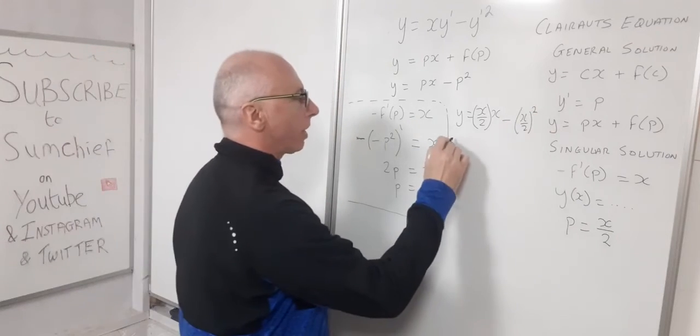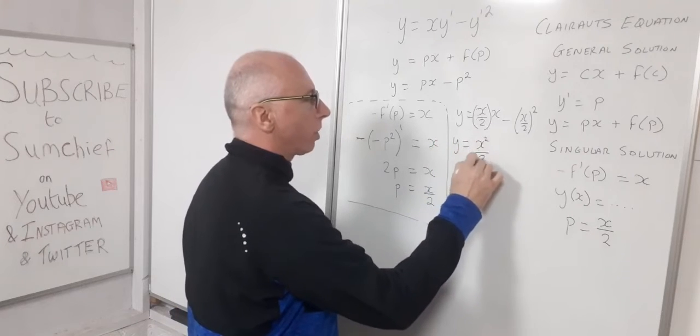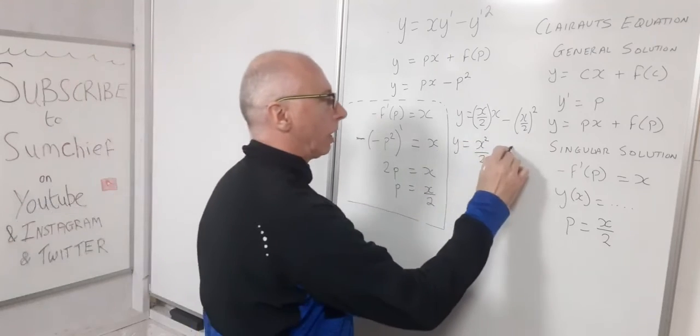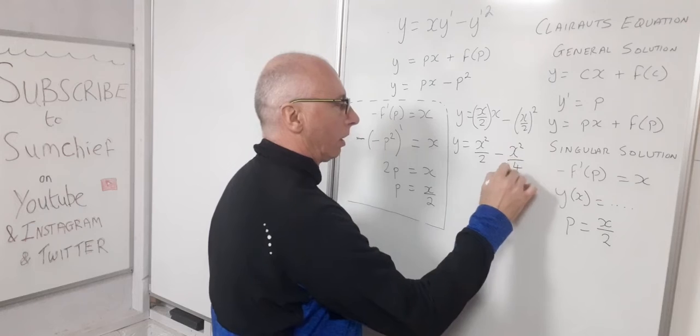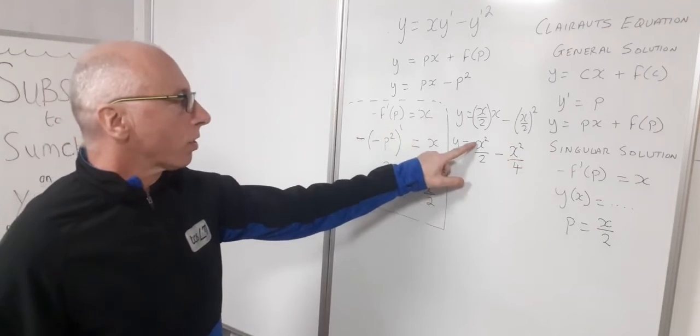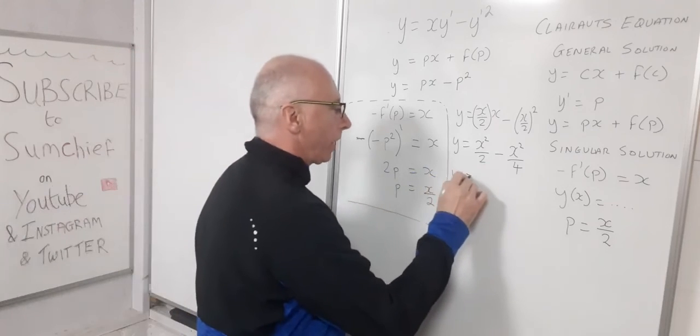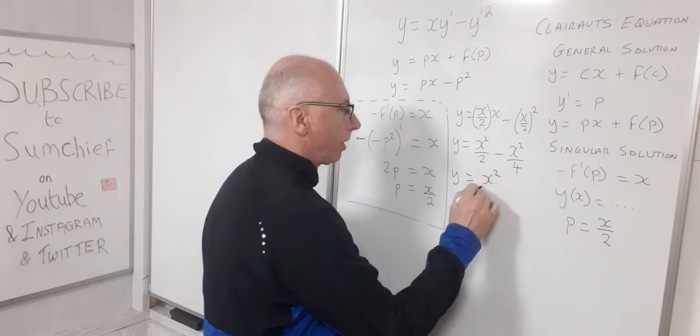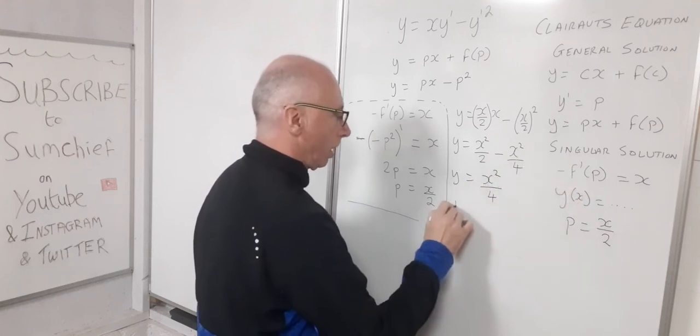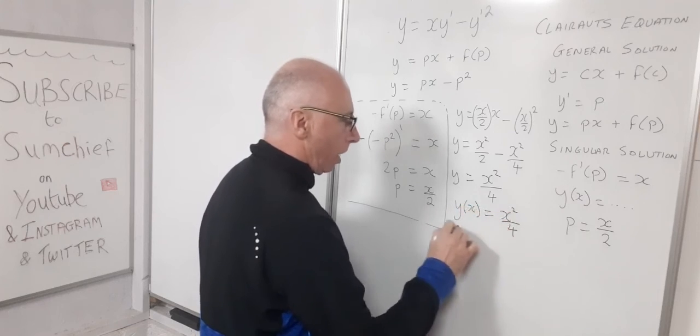Okay now we can simplify this up. So y equals x squared over 2 minus x squared over 4. Okay so now just try and work this out. We've got 2x squared over 4 minus x squared over 4. So therefore our y equals x squared over 4. So therefore our final solution is y of x equals x squared over 4.